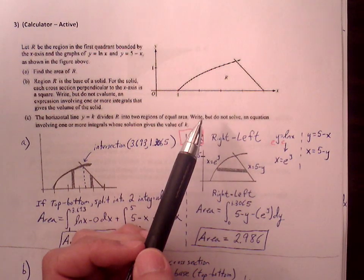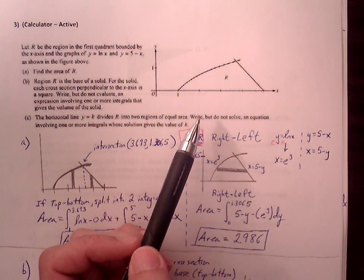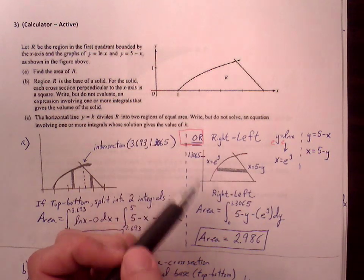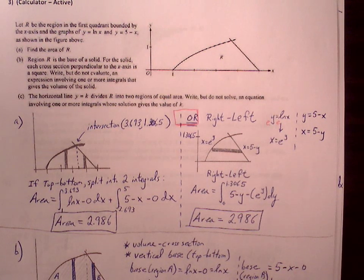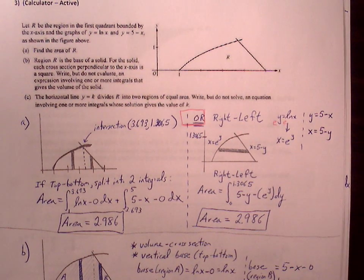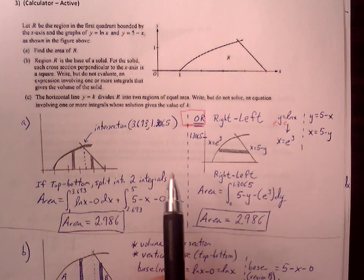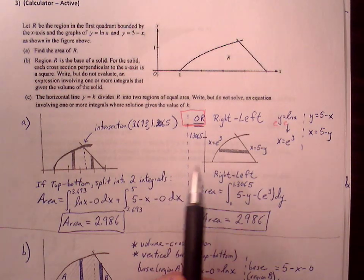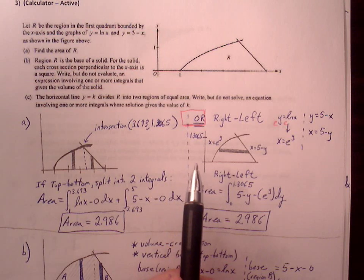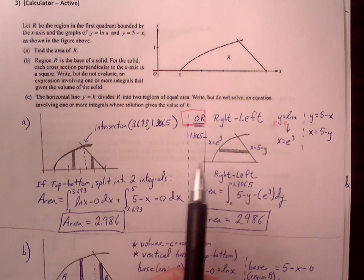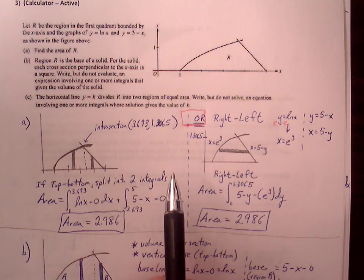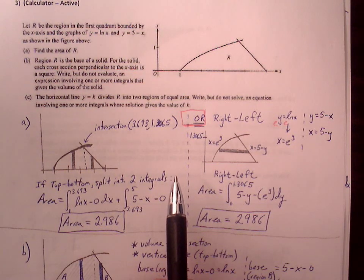With area, we have two formulas: top minus bottom or right minus left. I'll go over both forms that will allow you to find area. I think it's good to understand how to create area in both forms, to give us that ability, flexibility, and deeper understanding of what's needed to create top minus bottom or right minus left area representations.